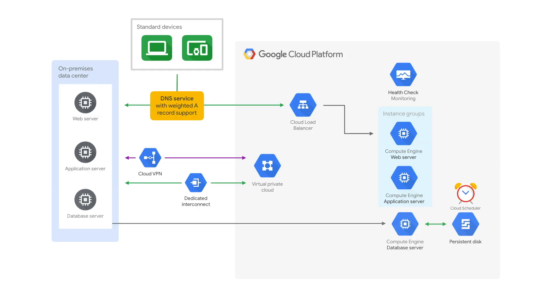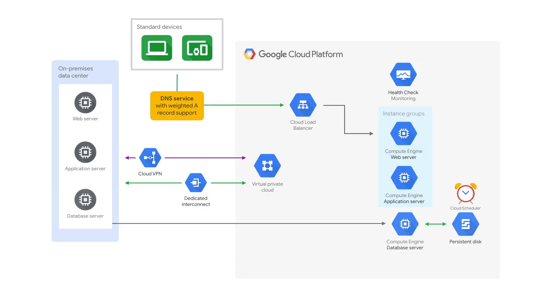With this hybrid approach, you need to use a DNS service that supports weighted routing to the two production environments so that you can serve the same application from both. In case of a failure on-premise, you just disable the DNS routing to the on-premise web server, and that's it. In most cases, the DNS service supports health checks and will automatically route all the traffic to the healthy servers on Google Cloud.